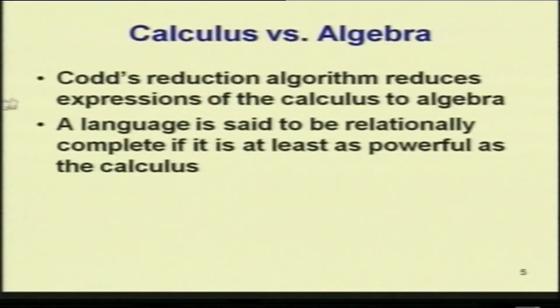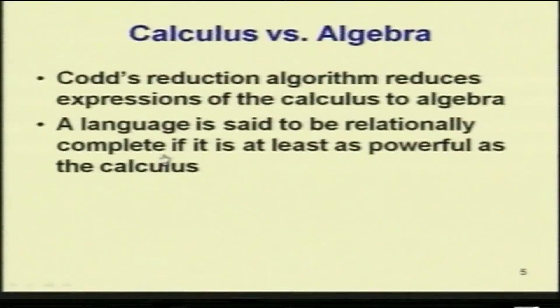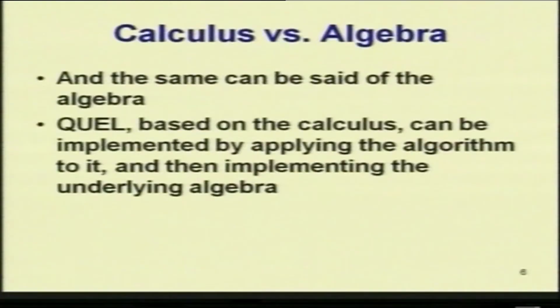Now let us look at the difference between calculus and algebra. Codd's reduction algorithm reduces expressions of calculus to algebra. Whether you do it in calculus or algebra, you can express the same thing because they are considered equivalent. A language is said to be relationally complete if it is at least as powerful as the calculus. The expressiveness of the language is decided by its formal model. Algebra is also relationally complete, and QEL, another language based on calculus, can be applied by implementing the underlying algebra.